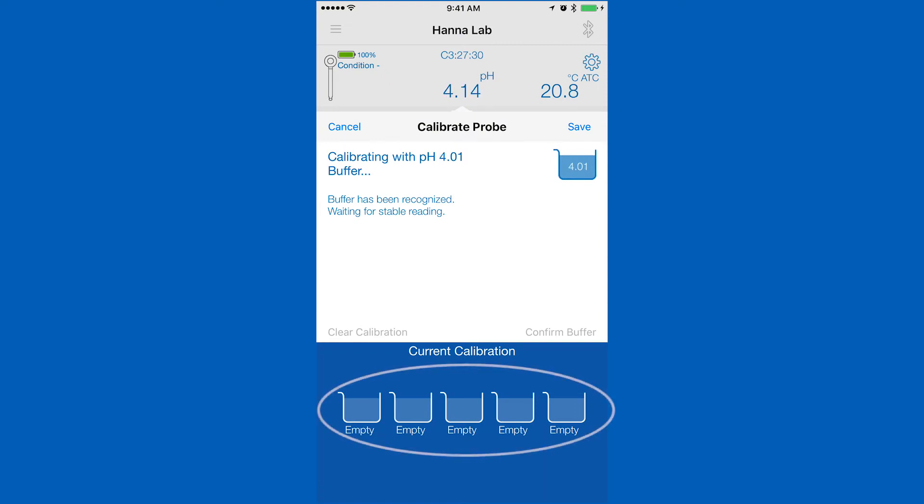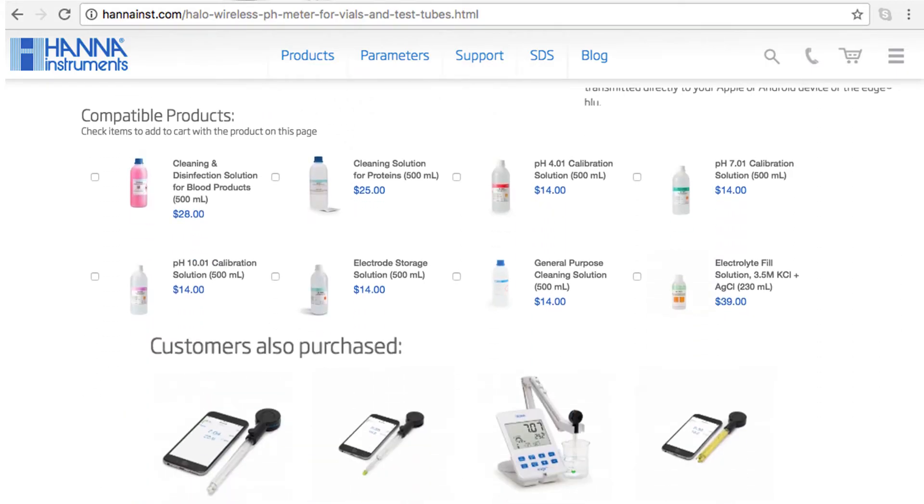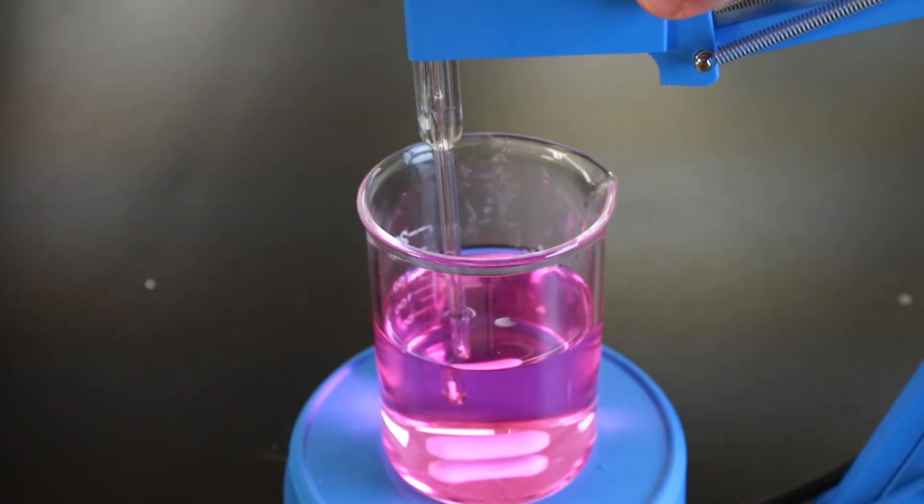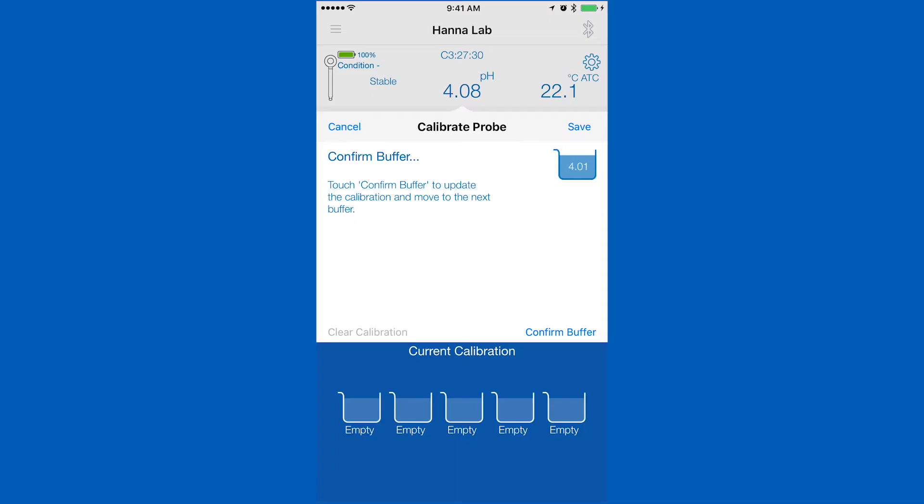Your Halo can calibrate up to 5 points that are automatically recognized. You can find all the calibration solutions you need right on the product page. Rinse and place your probe in your pH calibration solution and wait for a stable reading. Once stable, tap confirm.